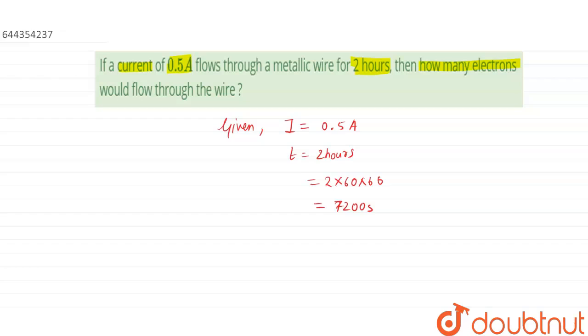That is 2 times 60 times 60, so this comes out to be 7200 seconds. Now we know that using the formula, charge equals current times time.